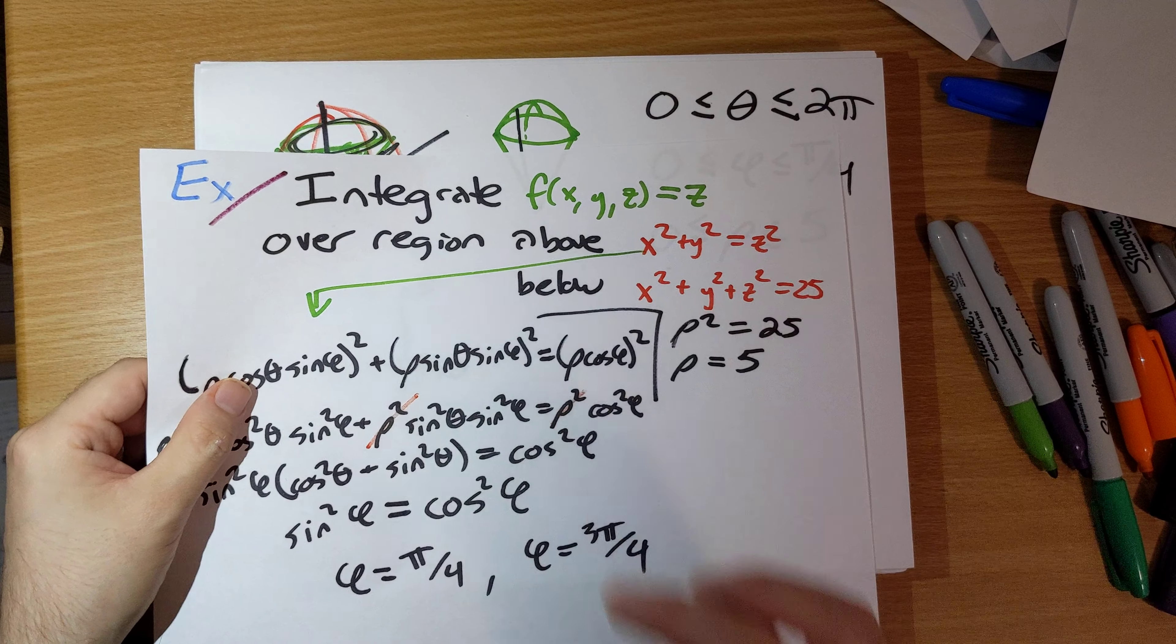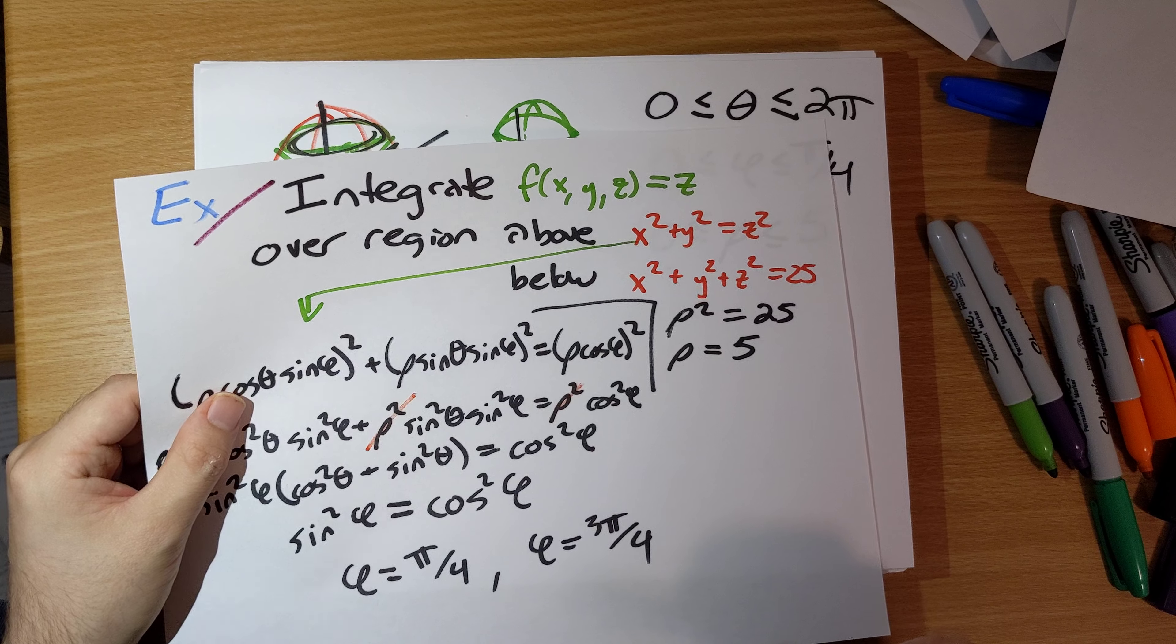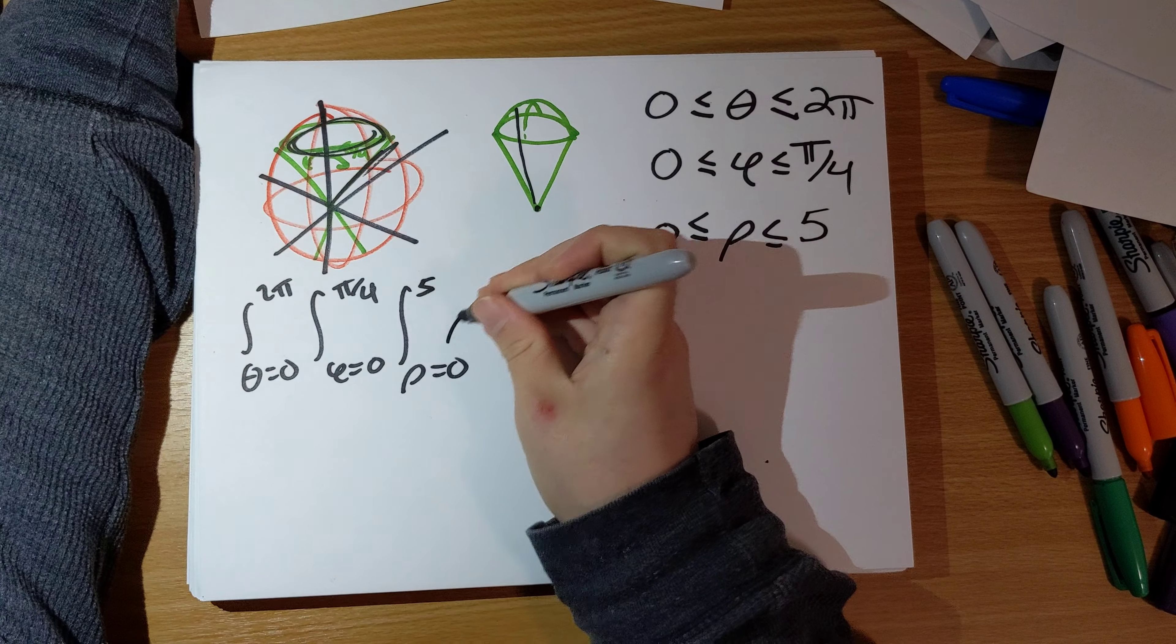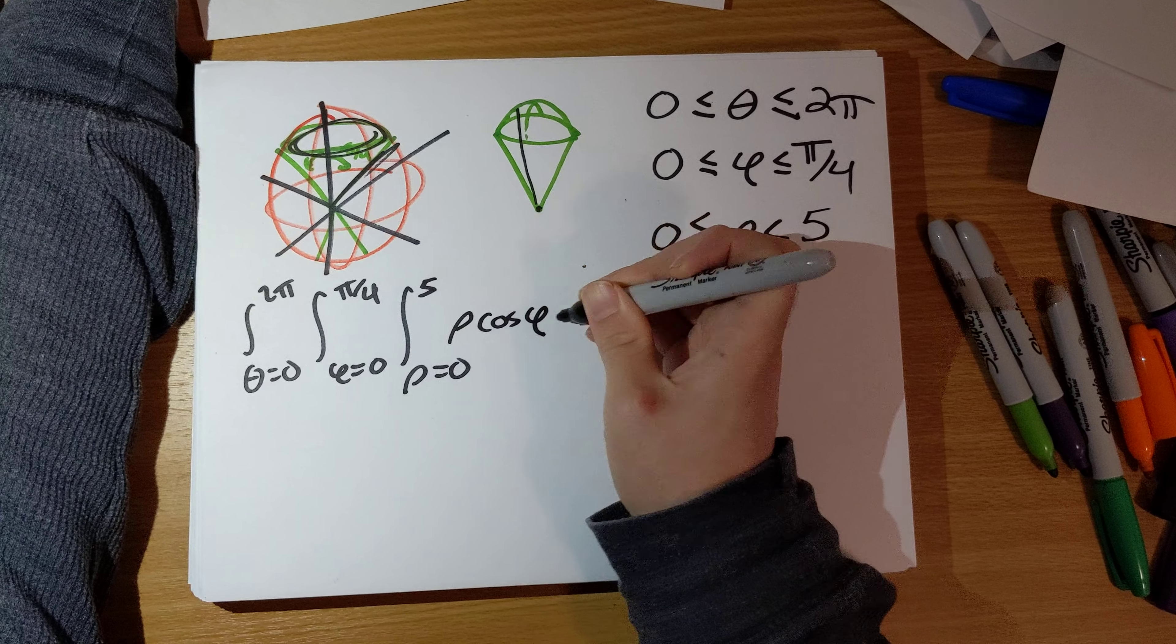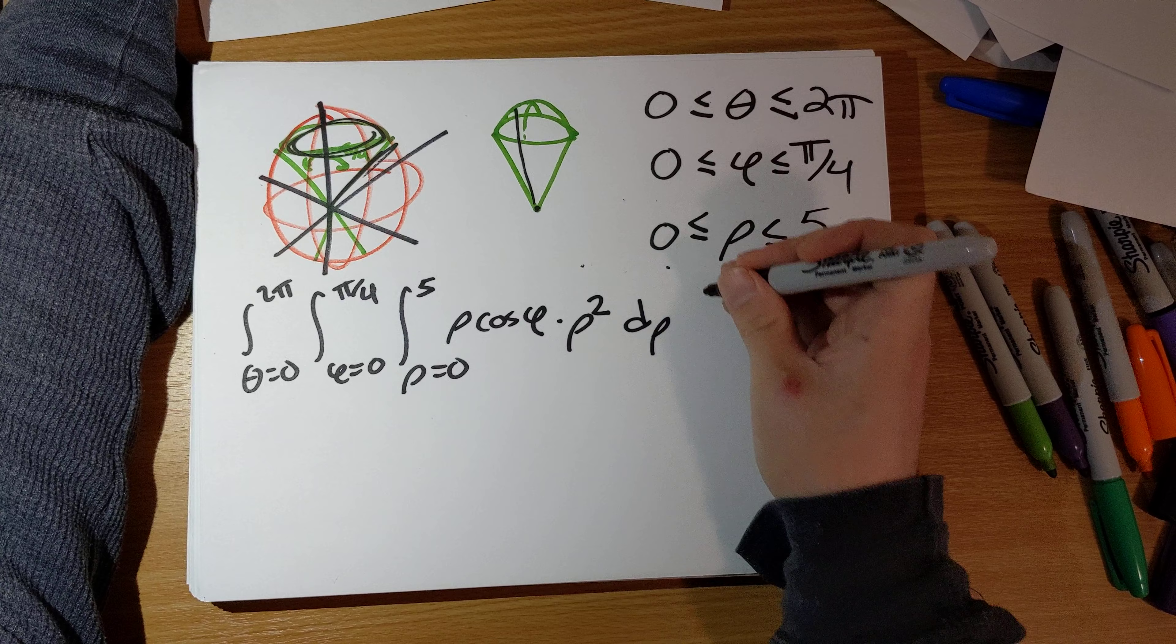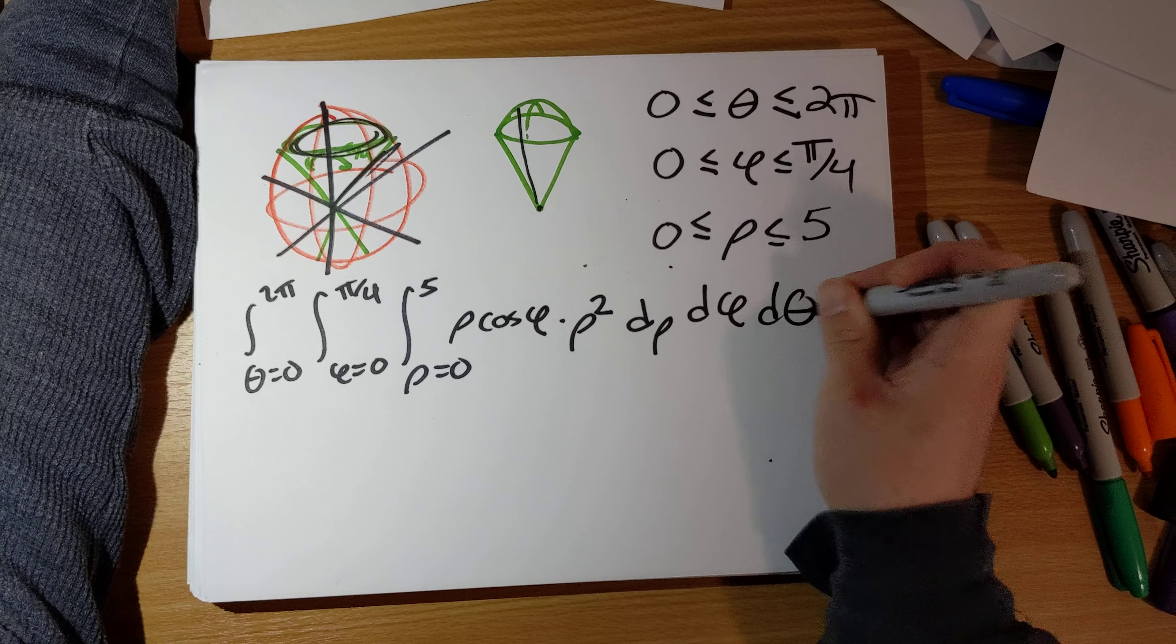The thing that we're integrating here, f of x, y, z equals z. Z equals rho cosine phi. D times, don't forget the rho squared, d rho, d phi, d theta.